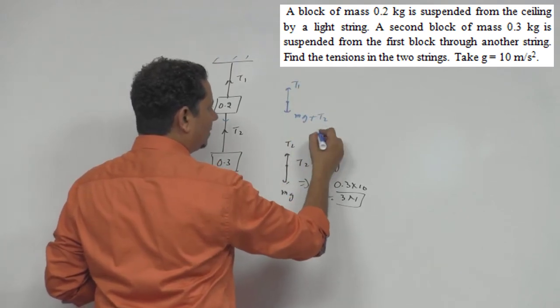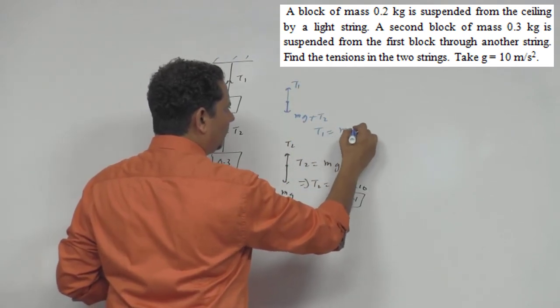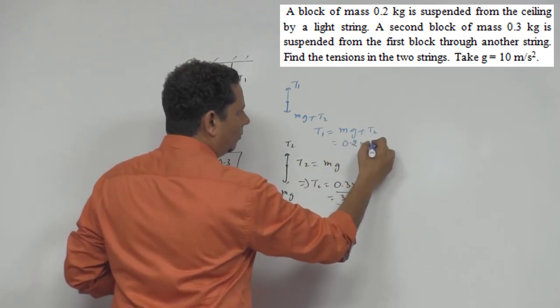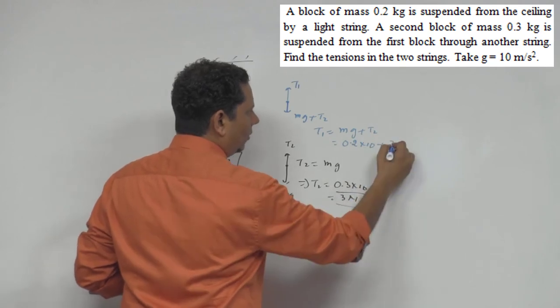Now, क्योंकि equilibrium में, which implies T1 will be equal to इसका Mg plus T2. तो इसका Mg अगर हम लिखेंगे, so this will be 0.2 multiplied by 10 plus T2 की value already 3 आ चुकी है.